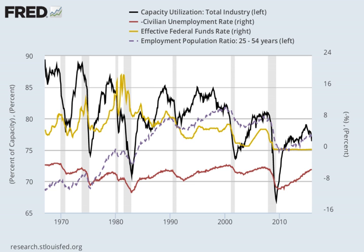One of the most used definitions of the capacity utilization rate is the ratio of actual output to the potential output. But potential output can be defined in at least two different ways. One is the engineering definition, according to which potential output represents the maximum amount of output that can be produced in the short run with the existing stock of capital. Thus, a standard definition of capacity utilization is the average of the ratios between the actual output of firms to the maximum that could be produced per unit of time, with existing plant and equipment.